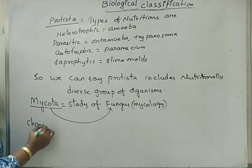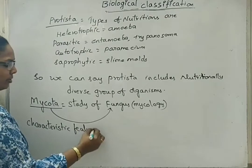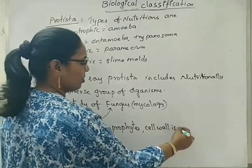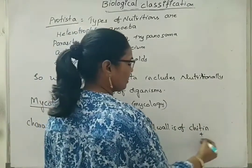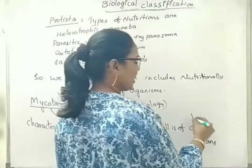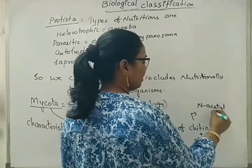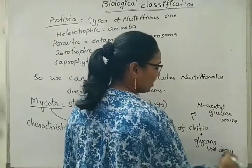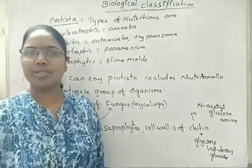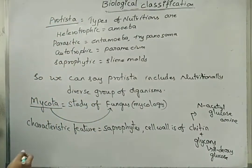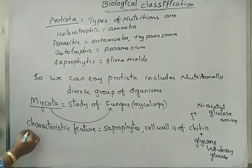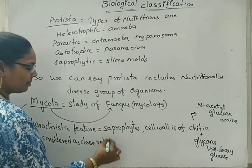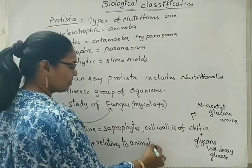So what are the characteristic features? First, we have to remember that they are saprophiles. The cell wall is composed of chitin plus glycans. Chitin is chemically composed of N-acetyl-glucosamine. Glycans include two deoxyglucoses. These two different types of compositions constitute the cell wall of fungus. They are considered as closer relatives to animals than to plants.